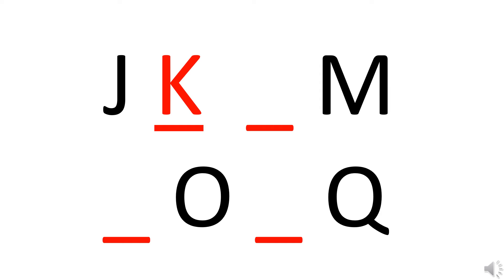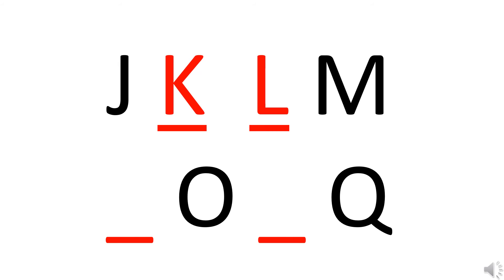Now that we have written letter K, again we have a blank. So what will come after K? Yes, L. Letter L. So we will write letter L. Now that we have written letter L, we have next letter M and a blank after M. So what comes after M? Yes, N. So now we will write letter N.